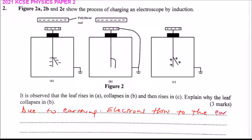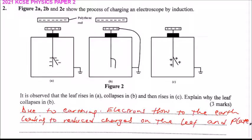This is earthed to the earth, leading to reduced charges on the leaf and plate. Hence, leaf divergence decreases.